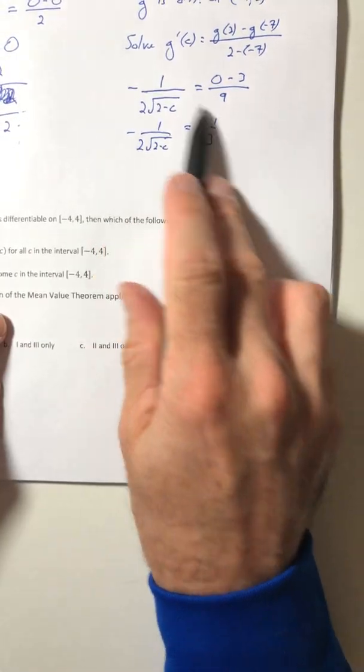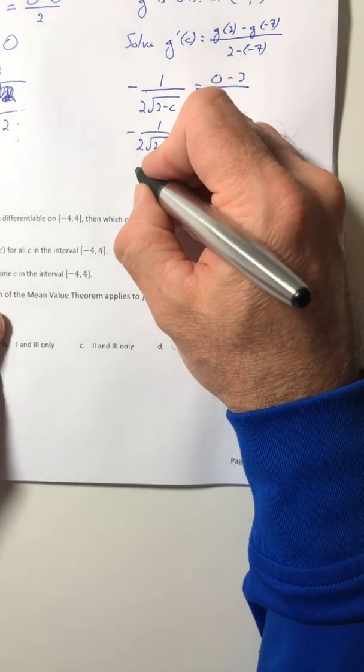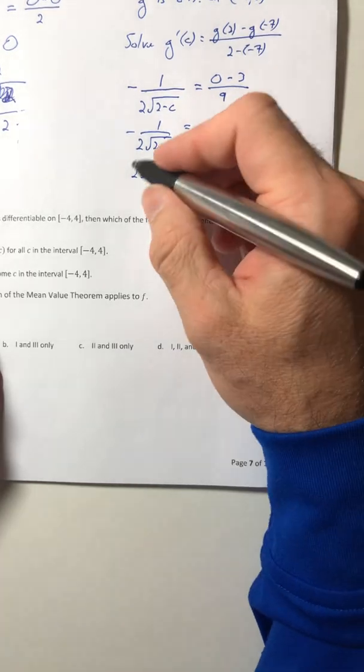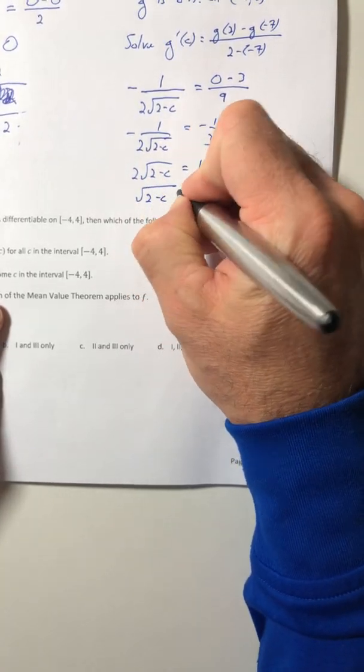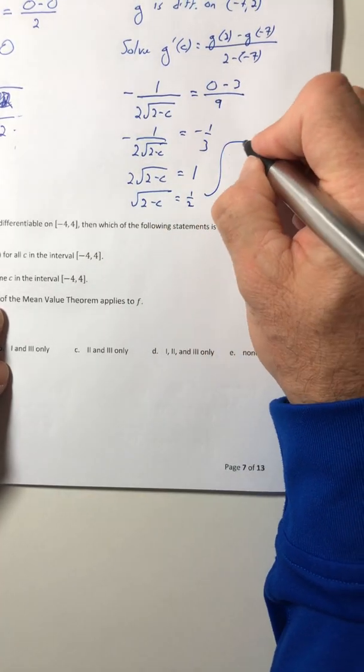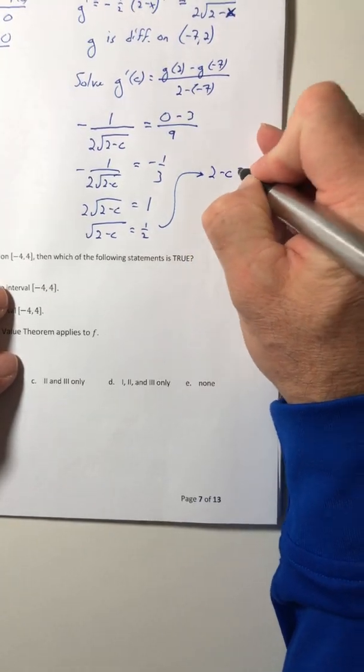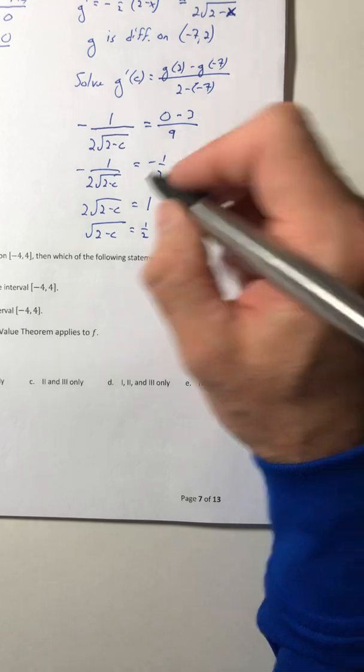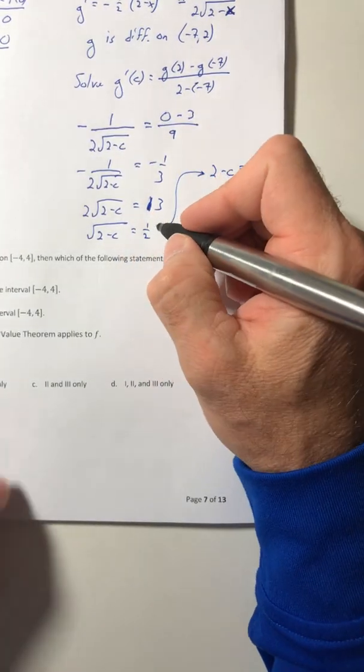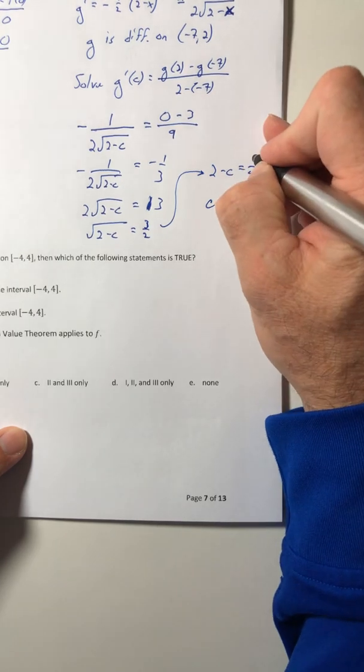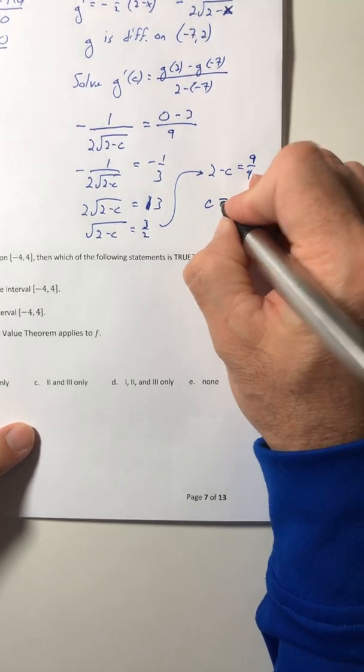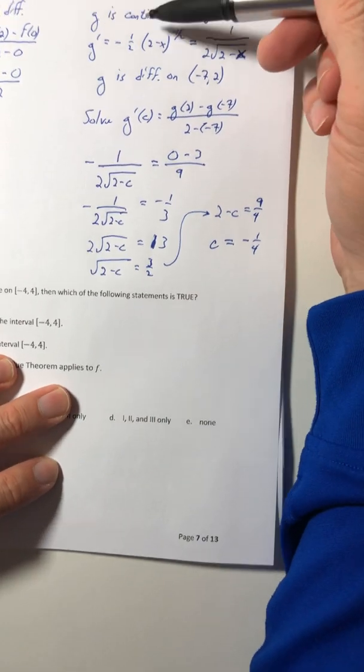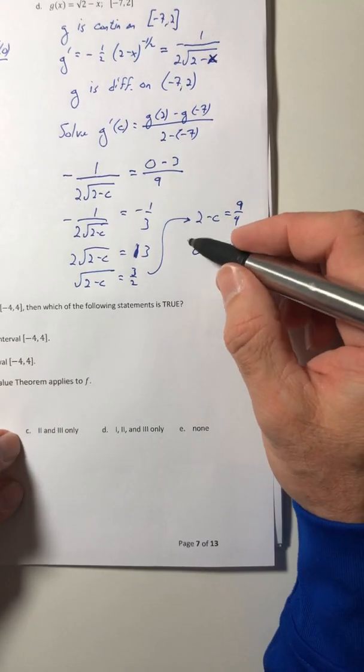So we can take the reciprocal of both sides and then cancel the negatives out. You can divide the two over. Square both sides. So C should equal a negative one-fourth, and that's inside your interval from negative seven to two. So we are good to go.